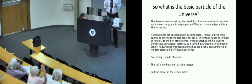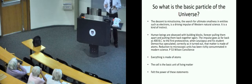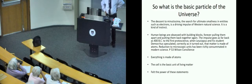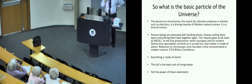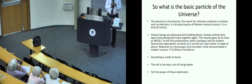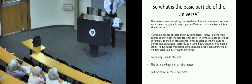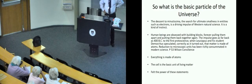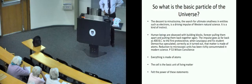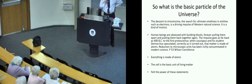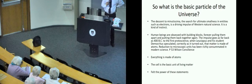Many years later, Albert Einstein, in 1905, put some pollen grains into a beaker of water, and he watched them bounce around. He said they are bouncing against moving atoms. So he was the first one to actually give it a scientific bent. The search for ultimate smallness in entities such as electrons is a driving impulse of Western natural science.